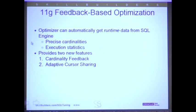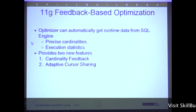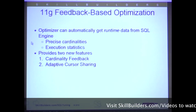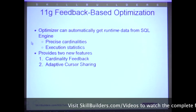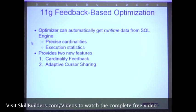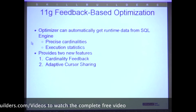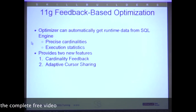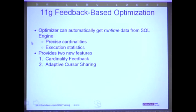Let's turn to 11G feedback-based optimization. This is the SQL engine passing information back to the CBO at runtime — automatically. What can it return? Precise cardinalities. So after you run your query one time, it checks cardinality. If the cardinality is way off, it updates the cursor cache with the proper cardinality and marks the query for re-optimization. Row source profiling is a new feature in 11G — it counts up the number of rows in each step, and those execution statistics are passed back to the cursor cache. This provides two new features: adaptive cursor sharing and cardinality feedback.